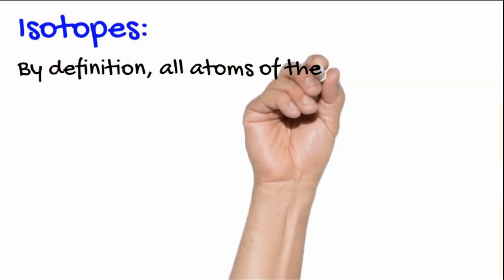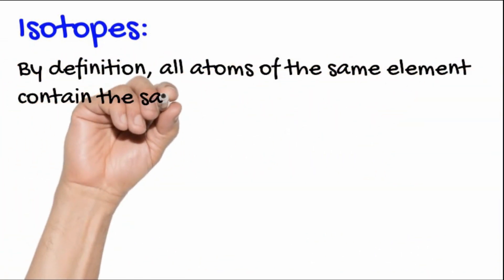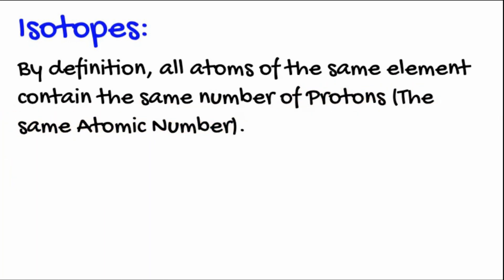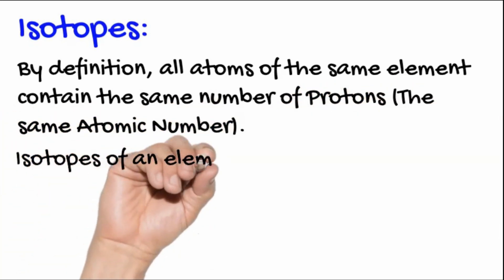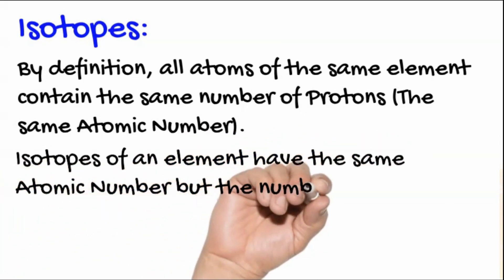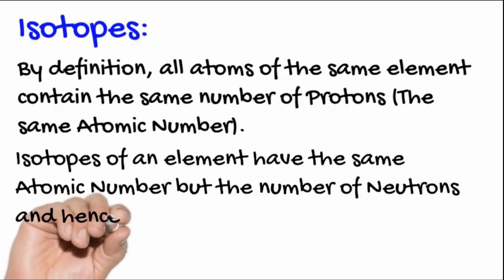By definition, all atoms of the same element contain the same number of protons. That's the same atomic number. Isotopes of the element have the same atomic number, but the number of neutrons, and hence the mass number, varies.